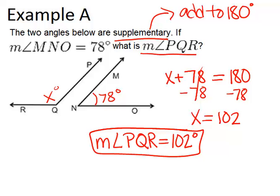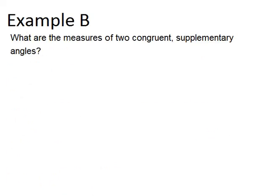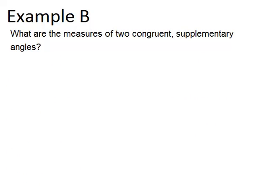Let's go to example B. In this example, it says, what are the measures of two congruent supplementary angles? So let's talk about the vocabulary. The word congruent means basically equal, that they have the same measure. We're looking for two angles that have the same measure, that they're the same size.